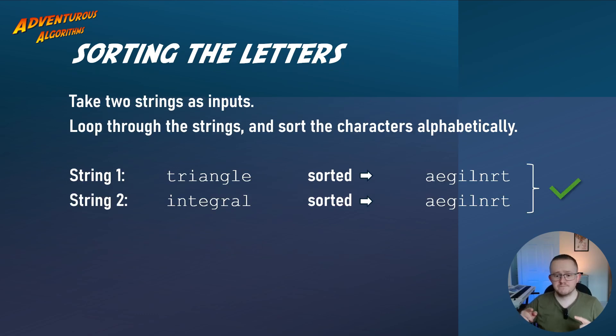So sorting the letters. This algorithm is relatively straightforward. It depends whether you've got to do the sorting yourself or not. So first of all, if you take two strings as inputs, and then you loop through the strings, and you sort the characters into alphabetical order. So let's say string one is the word triangle, and string two is the word integral. If I sort those letters into alphabetical order for triangle, and then I sort the letters into alphabetical order for integral, including any repetition, then I could see actually that makes the same sorted string.